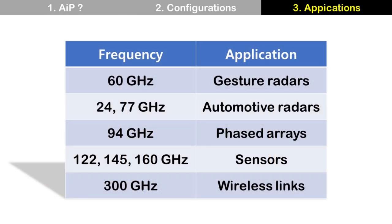AIP is used for many high-frequency applications in addition to smartphones and automotive radar. These include gesture radar at 60 GHz, phased array at 94 GHz, sensors, and wireless links.